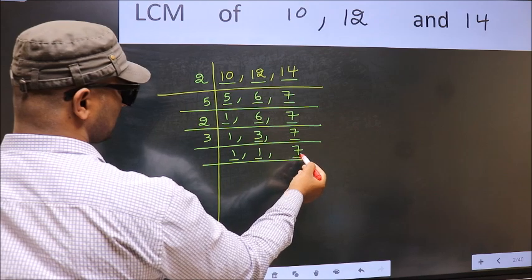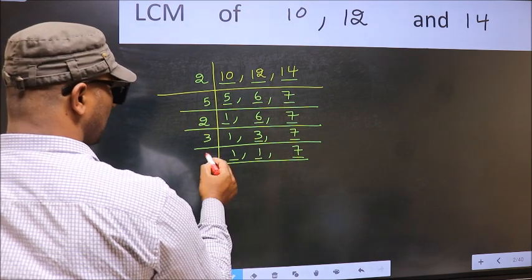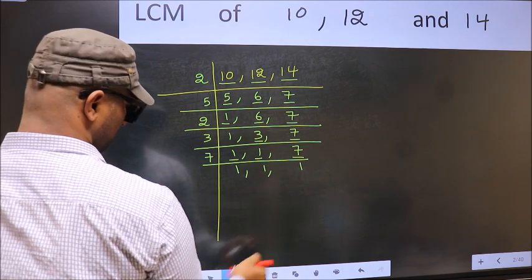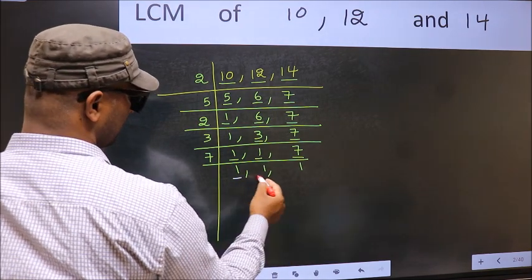So focus on the other number 7. 7 is a prime number. So 7 1s, 7. So we got 1 in all the 3 places.